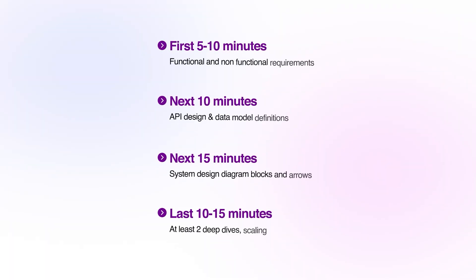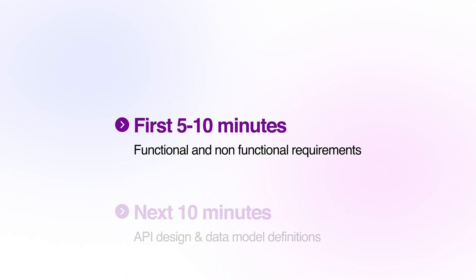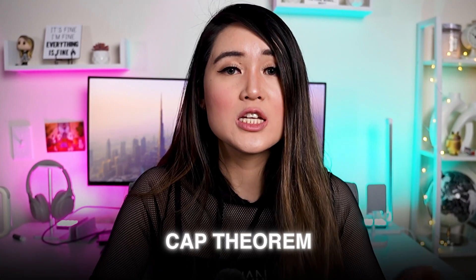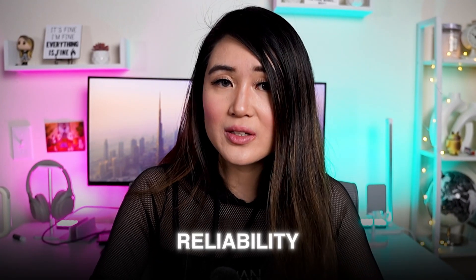Here's the high-level framework I use during my system design rounds, which are usually 45 minutes. In the first 5 to 10 minutes after getting the question, flush out the functional requirements to satisfy the prompt and then go into the non-functional requirements — for example, CAP theorem: do you want to prioritize consistency, availability, reliability, scalability, fault tolerance, etc. Make sure you ask clarifying questions and clearly state what is in scope and out of scope.